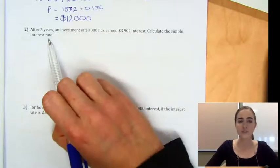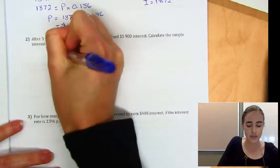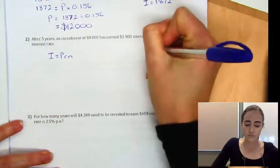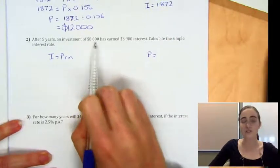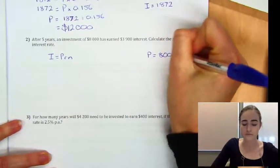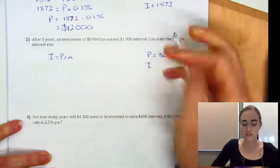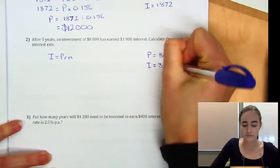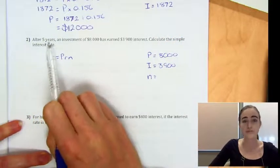So the rate is what we're looking for this time. Again, we'll start by writing our formula, I equals PRN. Our principal was an investment of $8,000. Our interest was $3,900. And the number of time periods was five years.